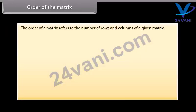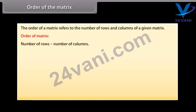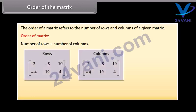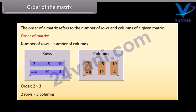Order of the matrix. The order of a matrix refers to the number of rows and columns of a given matrix. By convention, the order of a matrix is given by number of rows by number of columns. Here we can see two pictures of the same matrix with the rows and columns highlighted. The order of this matrix is 2 by 3, that is, 2 rows by 3 columns.